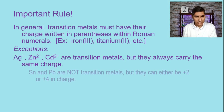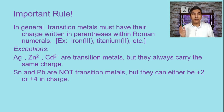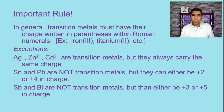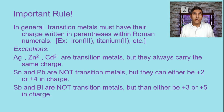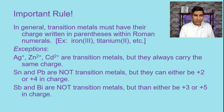We have some other exceptions: a couple of metals that are not transition metals but do need Roman numerals in parentheses — tin and lead. They're not transition metals, but can be either positive 2 or positive 4, so you need a Roman numeral for those. Likewise, antimony and bismuth can be either plus 3 or plus 5, so you need to specify the charge. Since this is a first-year course, we'll keep it to these examples.